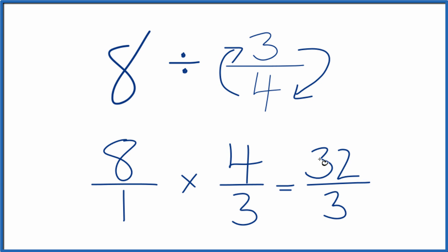We end up with 8 divided by 3 fourths. That equals 32 over 3. And we can't reduce this any further. It is an improper fraction though, because 32 is larger than 3.